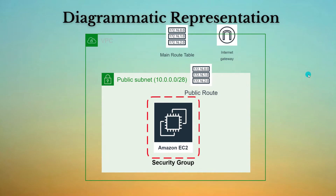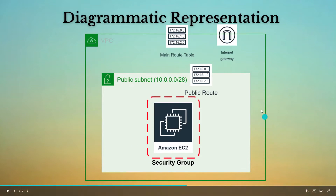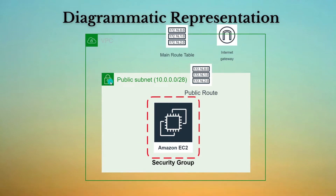Let's check the diagrammatic representation of today's implementation. We have our VPC installed, and along with it an internet gateway associated with that VPC, allowing internet connection within it. We have also created a public subnet with a public route table associated to it. In today's tutorial, we are going to launch an EC2 instance and create a security group that will allow HTTP and SSH access to that EC2 instance.